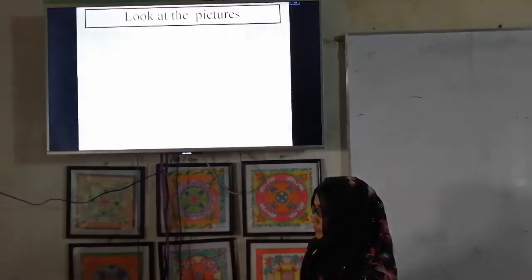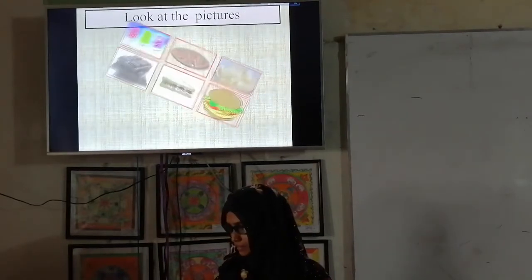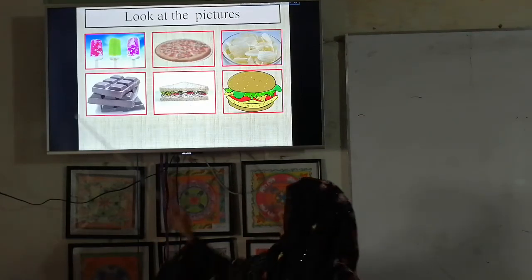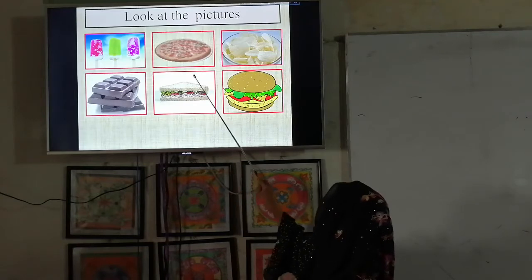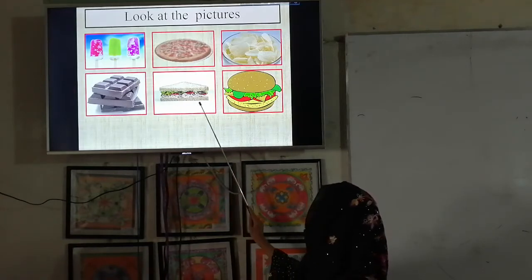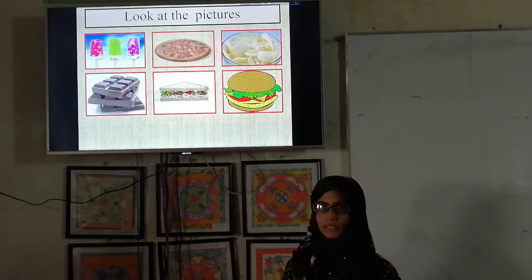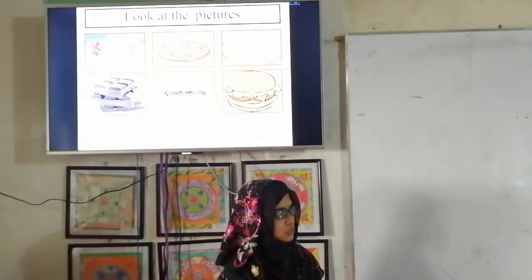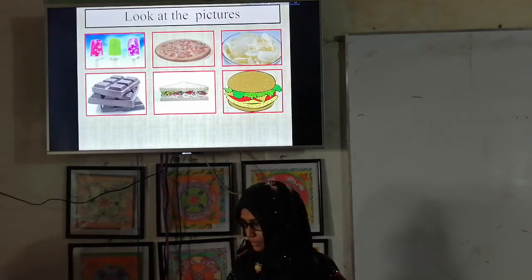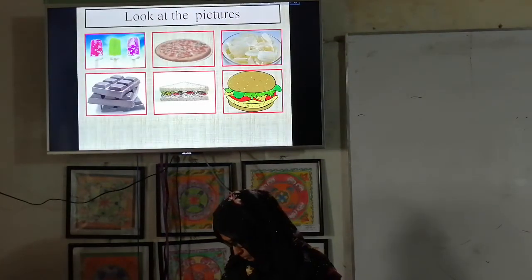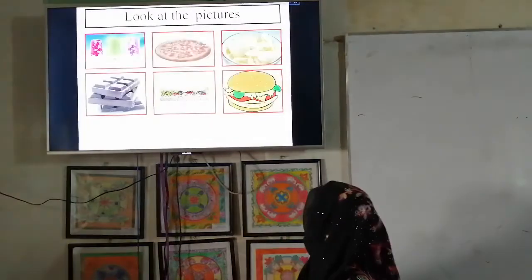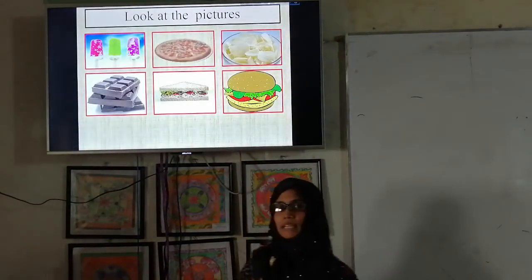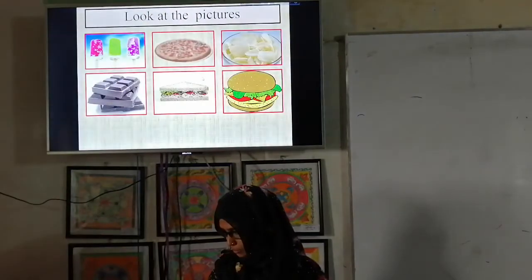I have explained the word meanings. Now look at the pictures. Here we can see ice cream, chips, chocolate, sandwich, and burger. These foods are fast foods, which are unhealthy for us and not beneficial for our body.